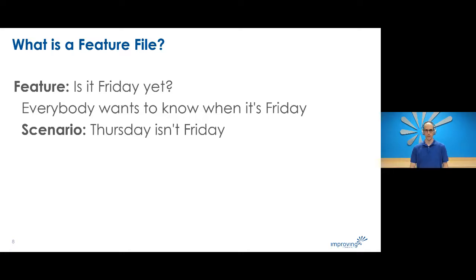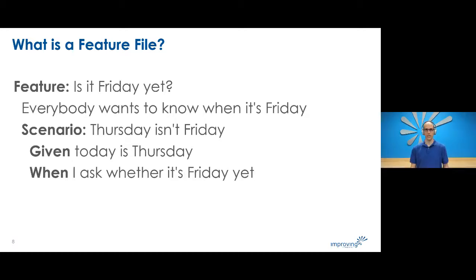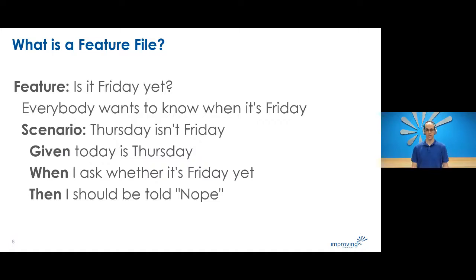A scenario is a single concrete example of how the system should behave in a particular situation, composed of statements called steps. We use the keyword 'Given' to set up the context where the scenario happens, 'When' to interact with the system somehow, and 'Then' to check that the outcome of the interaction was what we expected.